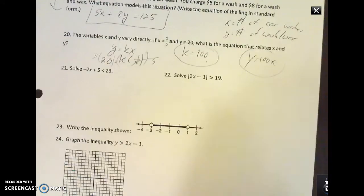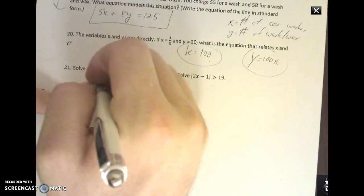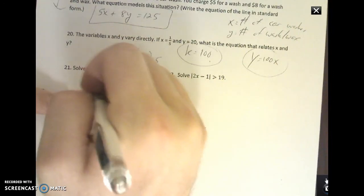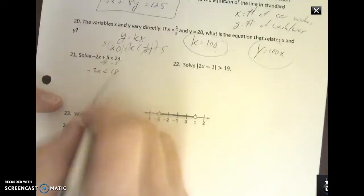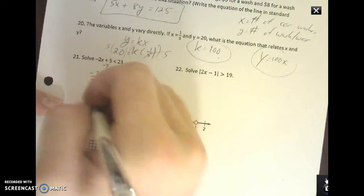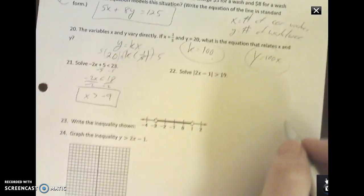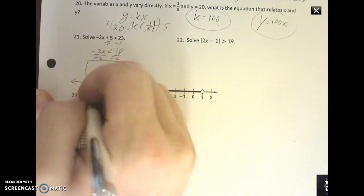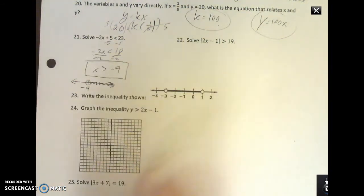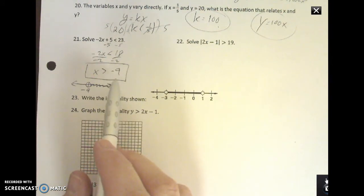Number 21: solve for x. So I want to get x by itself. I can subtract 5 over, get -2x is less than 18. Then if I divide by negative 2, please don't forget for inequalities when you divide by a negative, your inequality flips. X is greater than negative 9. If you were asked to graph that one, it's at negative 9, open circle, everything to the right. It's open circles for greater than or less than. It's closed circles for greater than or equal to or less than or equal to.